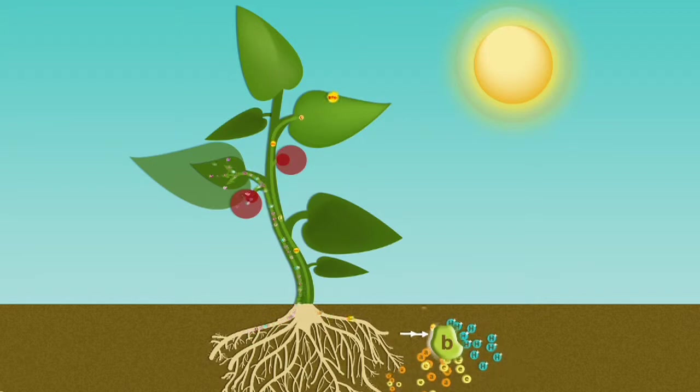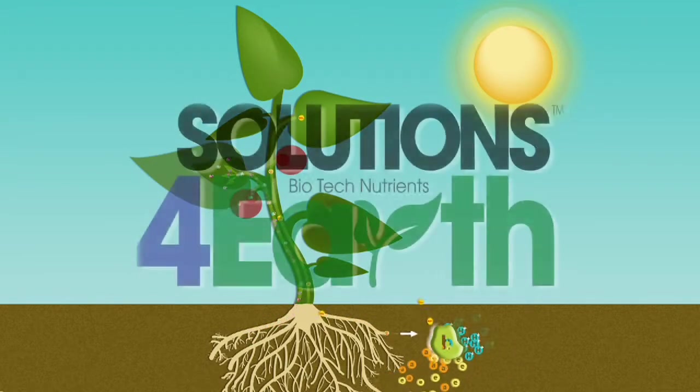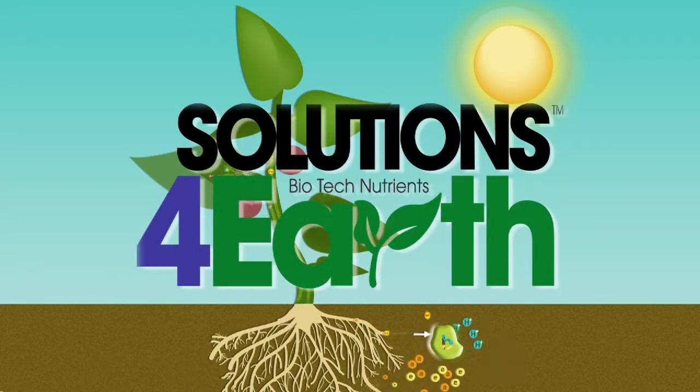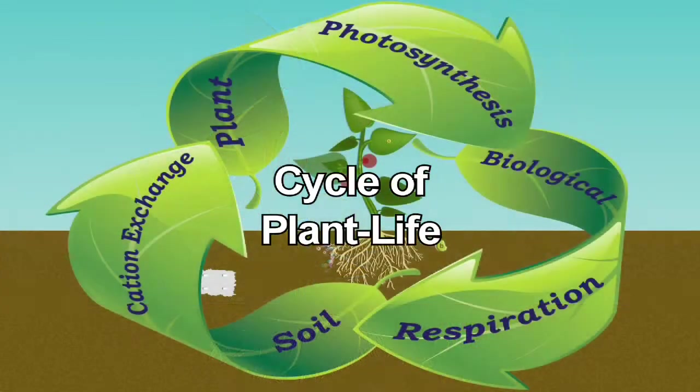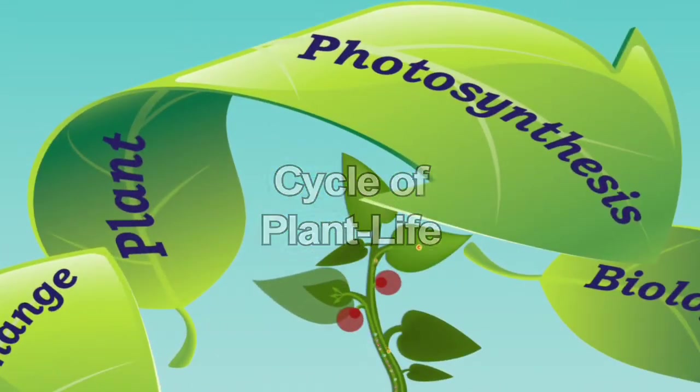To understand a plant's three main functions, Solutions for Earth has outlined them in what they call the cycle of plant life. The first function is called photosynthesis.